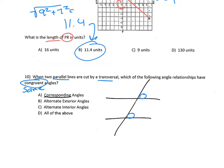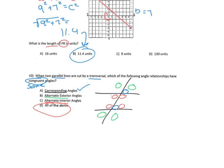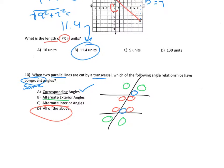Corresponding angles are true — those would be the same. Alternate exterior angles are out here, exterior of the parallel lines, and alternate means they're opposite each other. Alternate interior — same idea, but interior, inside the parallel lines. So all of those would be true; they would all be congruent angles.